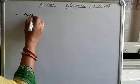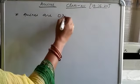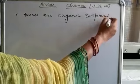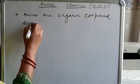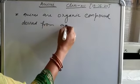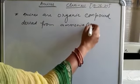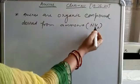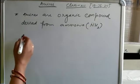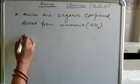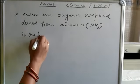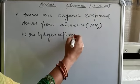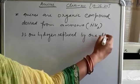Amines are organic compounds derived from ammonia. We all know the formula of ammonia — three hydrogens attached with nitrogen. Suppose one hydrogen is replaced by one alkyl group.